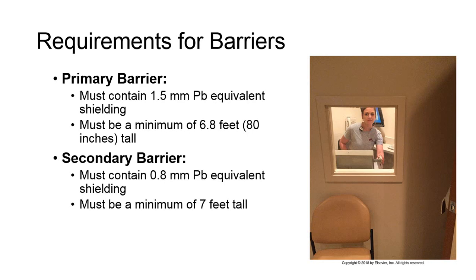Regulations for practice forbid ever pointing the x-ray beam toward the control booth, so it's always considered a secondary barrier, protecting the operator from scatter. Some basic minimum requirements exist between primary and secondary barriers according to regulations. It's important to remember that pure lead may not always be utilized; however, whatever the material used, we still describe its protective ability in units of lead equivalency.